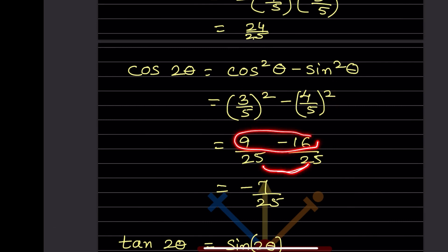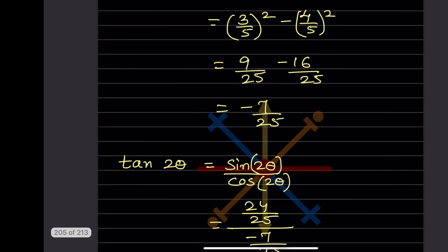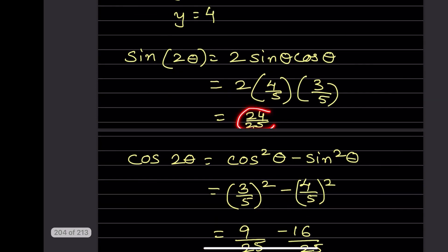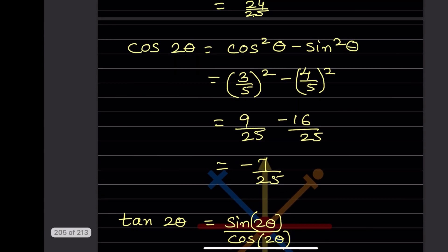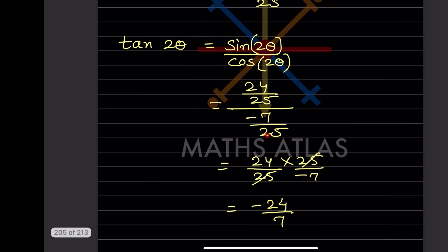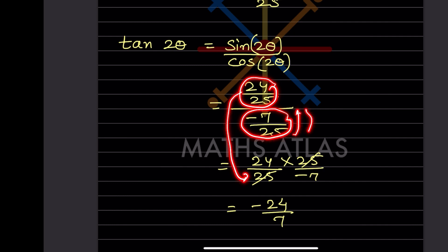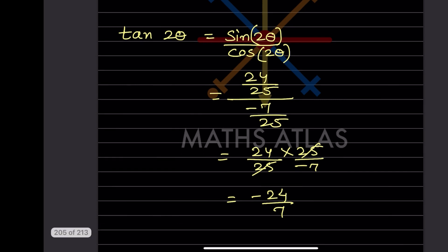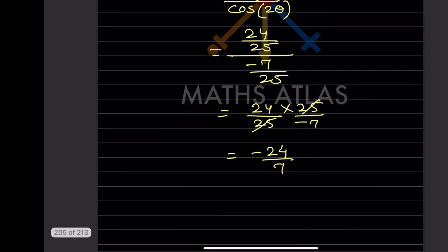For tan2θ = sin2θ/cos2θ: we have sin2θ = 24/25 and cos2θ = -7/25. Dividing: (24/25) ÷ (-7/25) = 24/25 × 25/(-7) = -24/7. So tan2θ = -24/7.